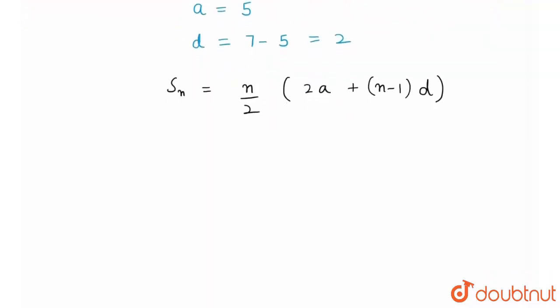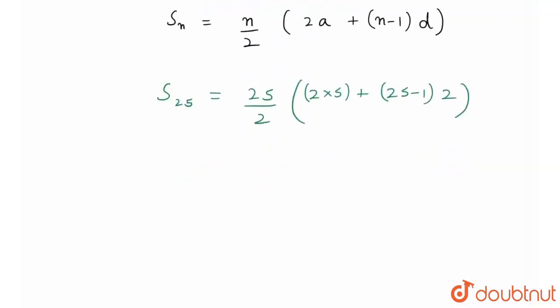Therefore, from this formula I can find the sum of 25 terms, which would be 25 divided by 2, times 2 times a, where a is equal to 5, plus n minus 1, that is equal to 25 minus 1, into d, where the common difference is equal to 2.